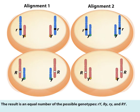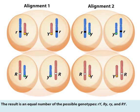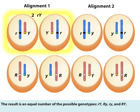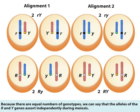The result is an equal number of the possible genotypes: little r big y, big r little y, little r little y, and big r big y. Because there are equal numbers of genotypes, we can say that the alleles of the r and y genes assort independently during meiosis.